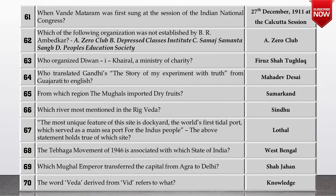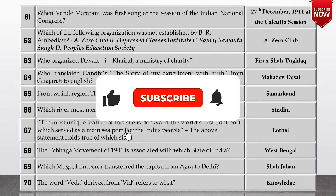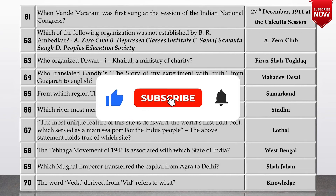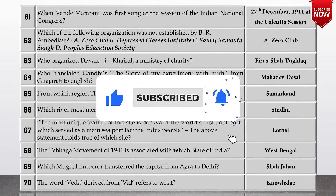Next question: from which region did the Mughals import dry foods? The answer is Samarkand. Next: which river is most mentioned in the Rig Veda? It was the Sindhu.